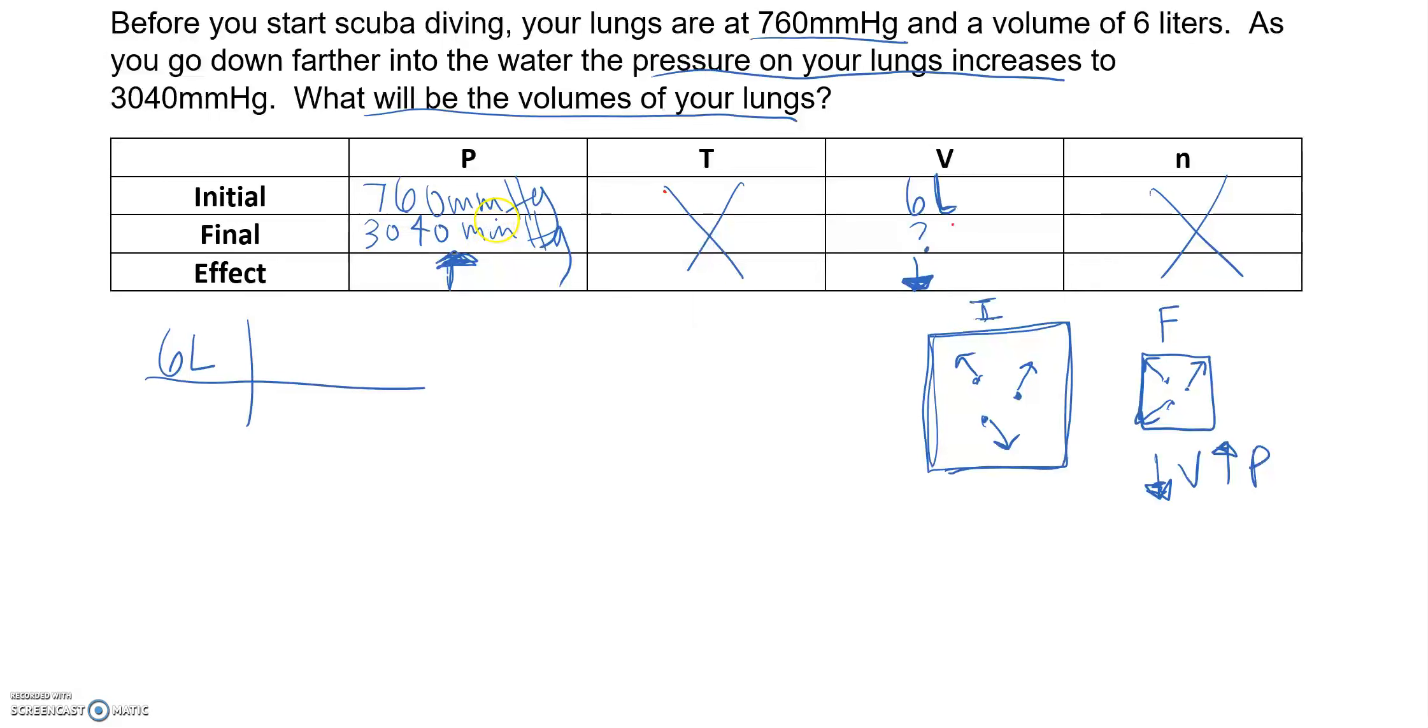That means we need to have 760 mmHg on the top and 3040 mmHg on the bottom. Millimeters of mercury cancel out, and that's going to leave us with 1.5 liters, which is lower than 6 liters.